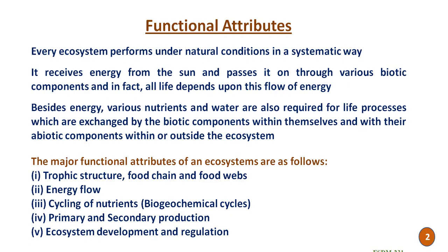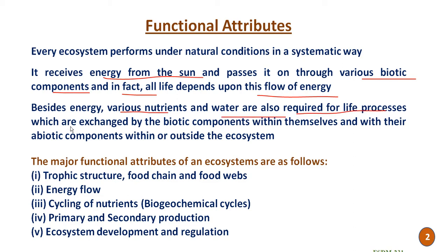These functional attributes of ecosystem consist of different attributes. Every ecosystem performs under the natural conditions in a systematic way. It receives energy from the sun and passes it on through the various biotic components, and all life depends on this flow of energy — this is the functional attribute. Besides energy, various nutrients and water are also required for life processes, which are exchanged by biotic components within themselves and with their abiotic components, within or outside the ecosystem.